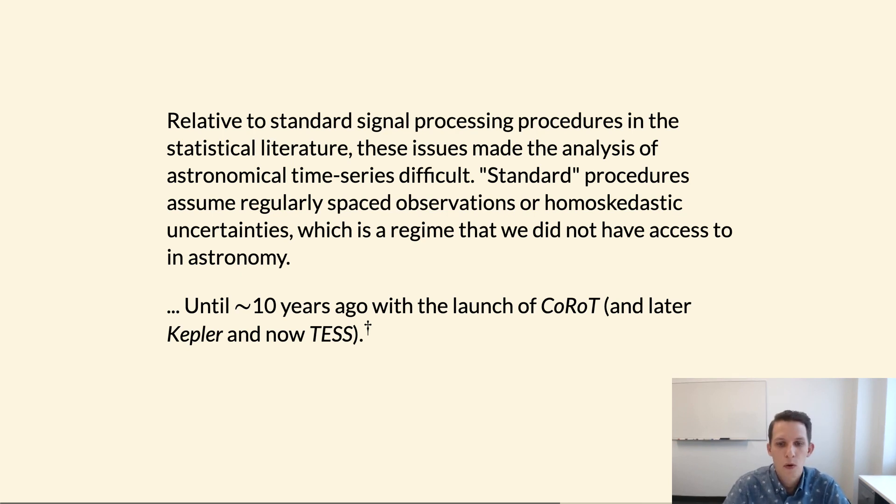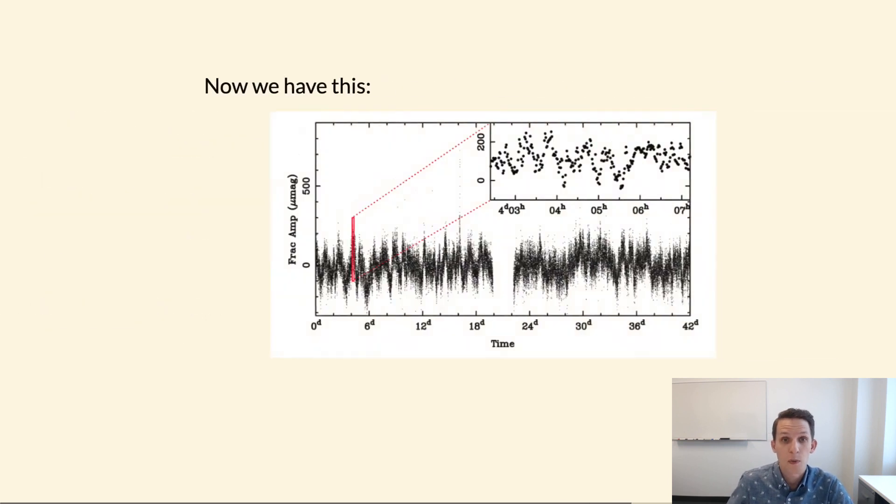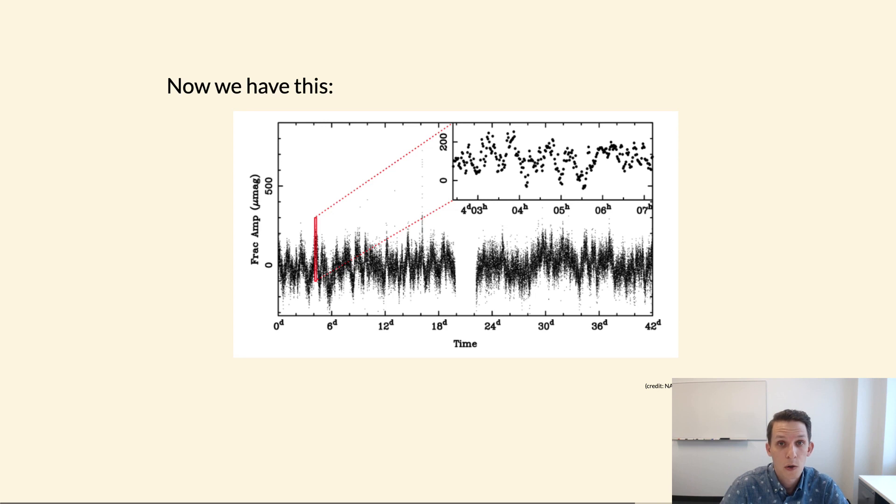Until about 10 years ago with the launch of the CoRoT satellite, and more recently the Kepler and now TESS satellites. These space-based satellites that are specifically designed to search for small radius planets actually do manage to achieve observations of pristine quality, so the satellites are above the atmosphere, so there is no atmospheric or cloud attenuation of the light coming from these sources, while also being able to maintain a regular cadence over a long period of time. So here's a zoom in on a Kepler light curve of a variable star, and you can see that observations are obtained every 30 minutes in this particular case.